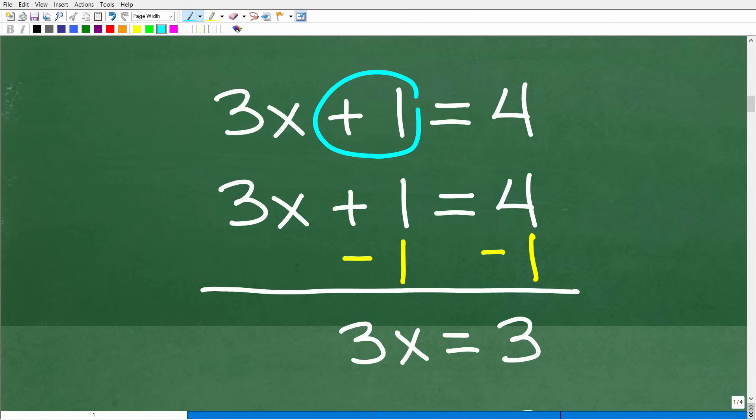OK, so we have this 1 over here. We want to get this over to the other side because, remember, I want variables or variable terms like 3x on the left. And I want all my numbers on the right. And I have this plus 1 over here. So let's get that over to this side of the equation, the right-hand side of the equation.